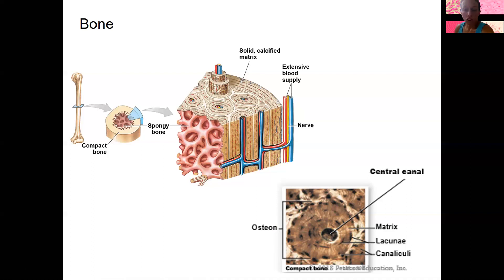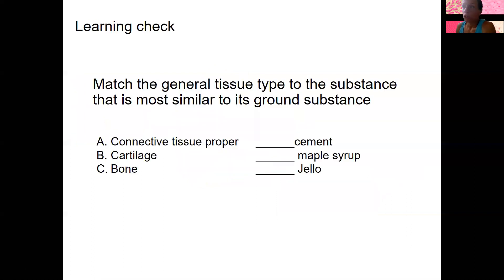Compared to cartilage, bone is going to be stronger, largely because of that calcium matrix. That's a brief introduction to bones — we'll come back to them in the chapter all on bones. Quick learning check: match the general tissue type to the substance most similar to its ground substance. Bone is most like cement, connective tissue proper is most like maple syrup — the thinnest — and cartilage is more like jello.